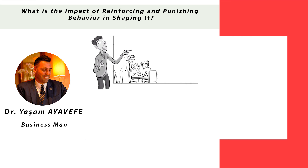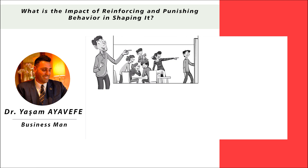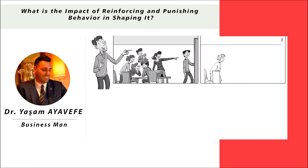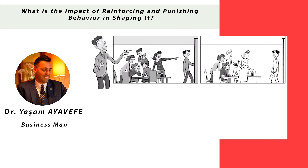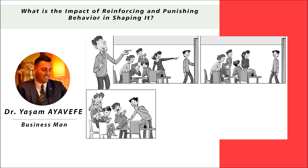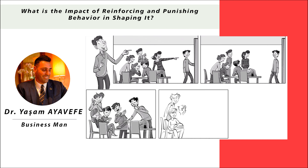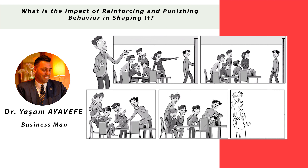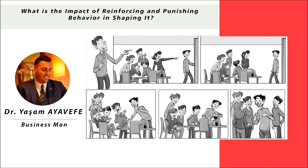You can try a classroom exercise: one individual must exit the room, and will be given a task to complete, such as finding a particular book. Those remaining in the room will provide cues — clapping their hands — to guide the person. When the person is invited back into the room to attempt the task, every time they are on the right track, clap louder. If they move away from the task, reduce or stop the applause. Once the person understands what they are supposed to do, let them explain the task.